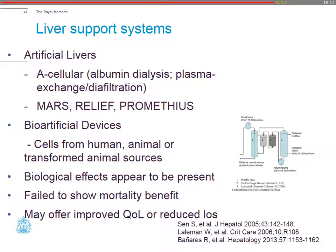Finally, liver support systems. There are a number of studies looking at artificial livers, whether albumin dialysis or plasma exchange—the MARS study, the RELIEF or Prometheus study—and also new bioartificial devices. The problem is that none of them have shown any mortality benefit. Some have shown improved quality of life or reduced length of stay, but at present there is not enough evidence to show longer-term mortality benefit in these liver support systems.